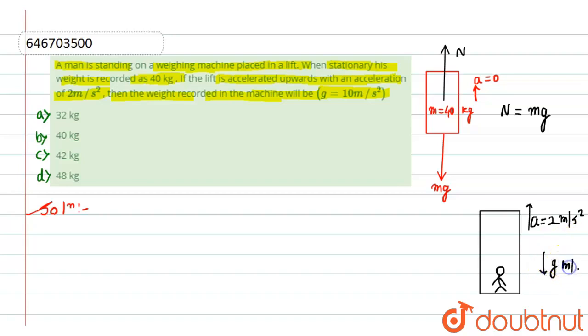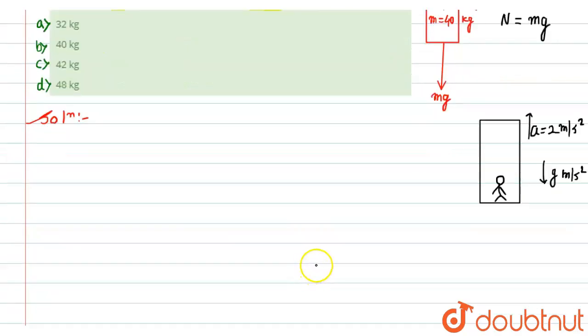So what we will do, we simply try to do FBD on man. If we do the FBD on man, the force which will act in the downward direction because of gravitational force will be mg.